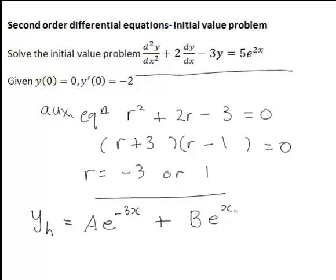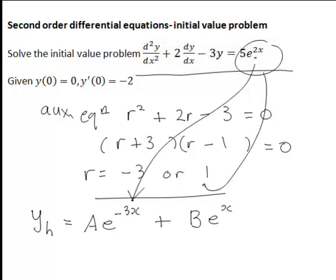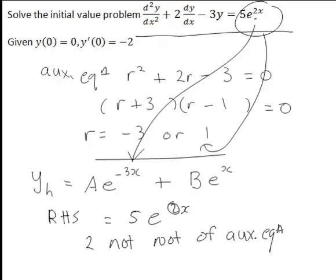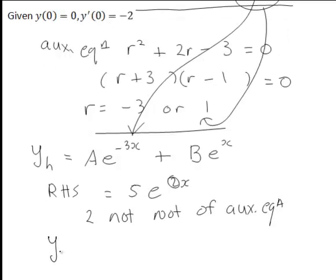The next step is to look at the right-hand side of the DE, which is 5e to the 2x — so we focus on the e to the 2x part. This is of the form e to the px, and what is important is whether the number 2 is a root of our auxiliary equation. The roots were negative 3 and 1 — neither is 2. Since 2 is not a root of the auxiliary equation, we pick a particular integral yp of the form c·e to the 2x.